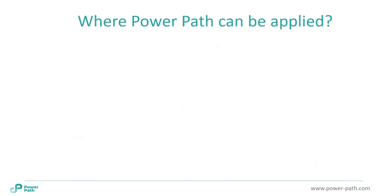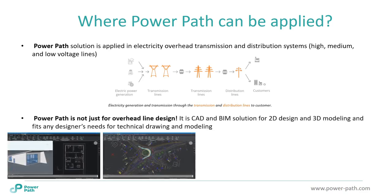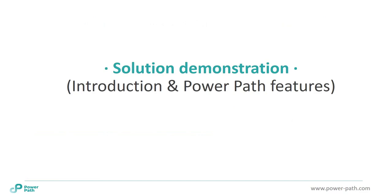The third reason is we wanted to create a BIM solution, because there are no software solutions supporting a BIM approach in designing power lines. PowerPath can be applied for creating transmission and distribution lines — there are no limitations for high, medium, or low voltage power lines. PowerPath is not just for designing overhead lines; it is a standalone solution with integrated tools for 2D design and 3D modeling, allowing designers to create any technical drawings.